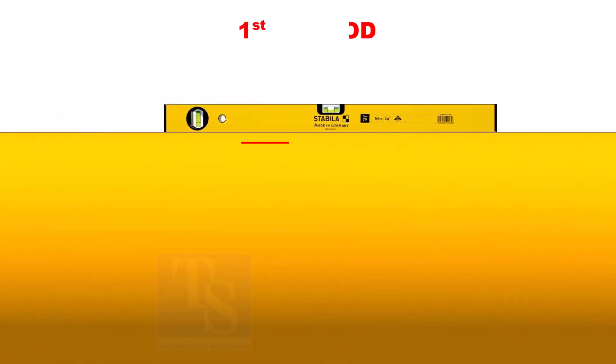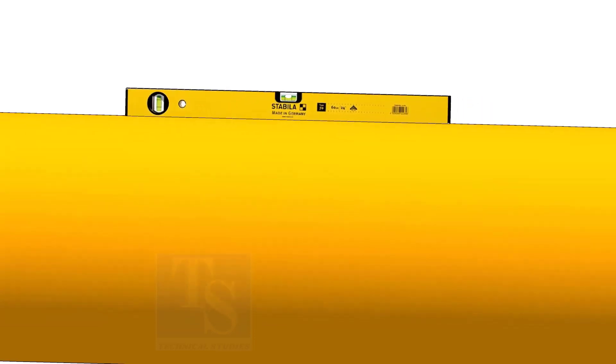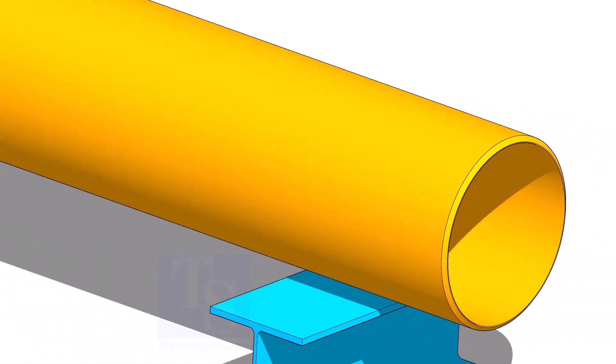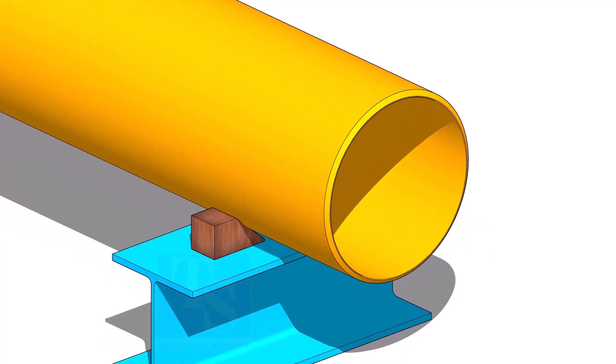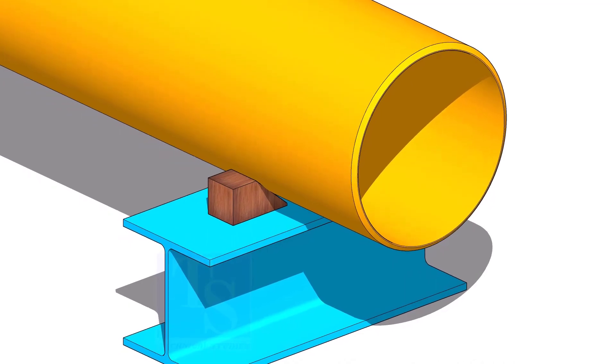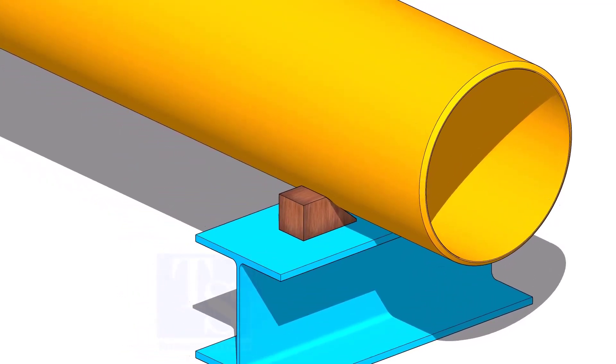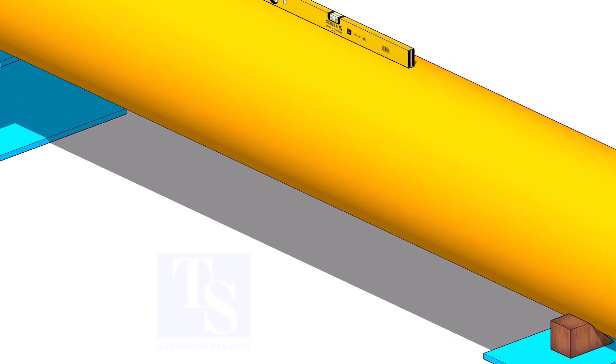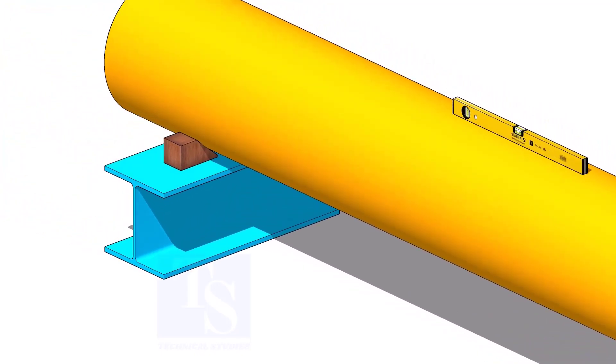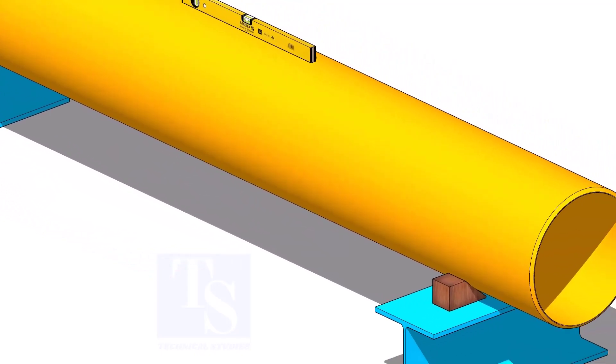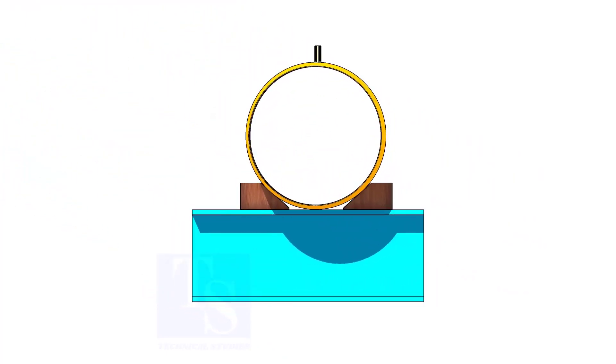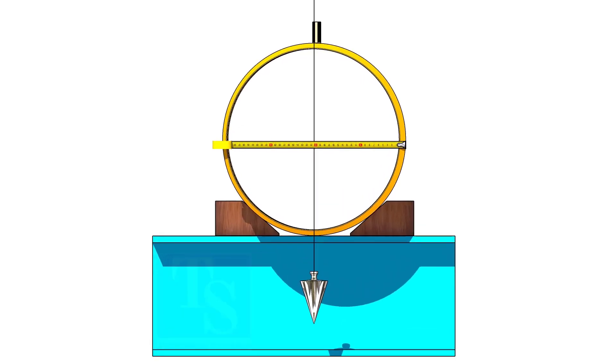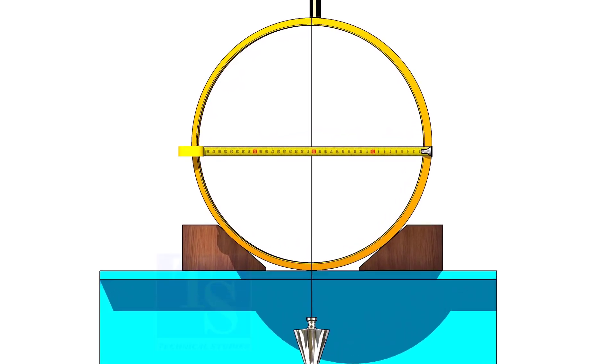Level the pipe and put packing on both sides so that the pipe will not roll. Put a plumb at the center of the pipe. Adjust the plumb to the half diameter of the pipe.